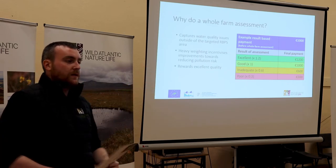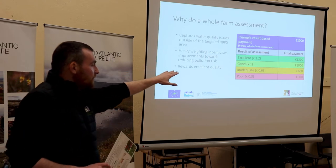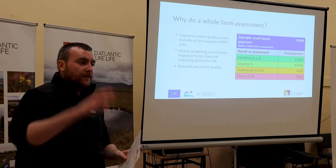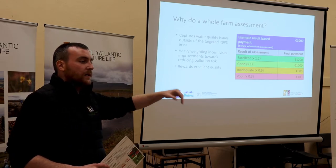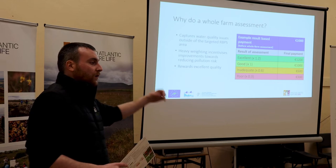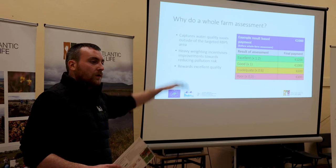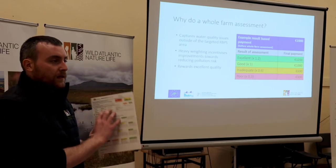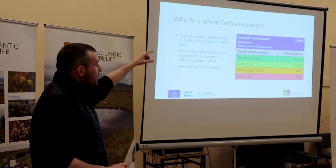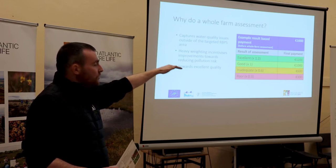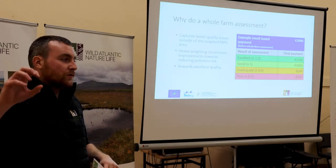Whatever payment you would have received from your plot habitat scores - what Derek just went through - this number is going to be used as a multiplier on that, and that will be your final payment. So for example, if somebody was eligible for 1,000 euros from their plot habitat scores and they were awarded an excellent score, that 1,000 euros would be multiplied by 1.2, so you'd be getting 1,200 euros - an extra 200 euros.